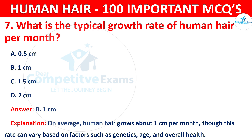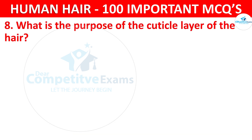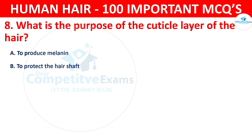Question number 8. What is the purpose of the cuticle layer of the hair? The options are to produce melanin, to protect the hair shaft, to store nutrients, or to regulate hair growth.